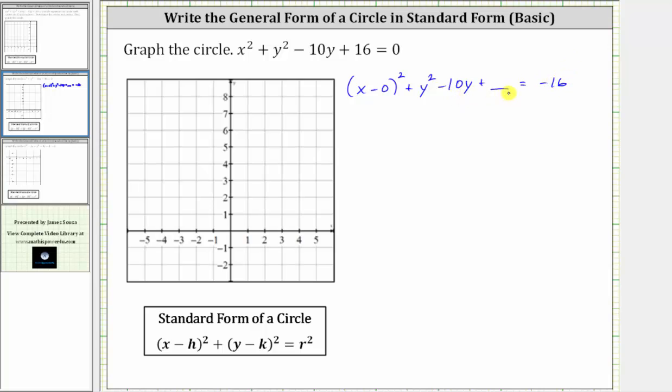And now we'll make a perfect square trinomial in terms of y. To complete the square, we need to add the square of half of b to both sides of the equation where b is the coefficient of y, which is -10. So if b is -10, half of b is going to be -5. The square of -5 is positive 25, which means we add 25 here to make the y part a perfect square trinomial. And to maintain equality, we also add 25 to the right.